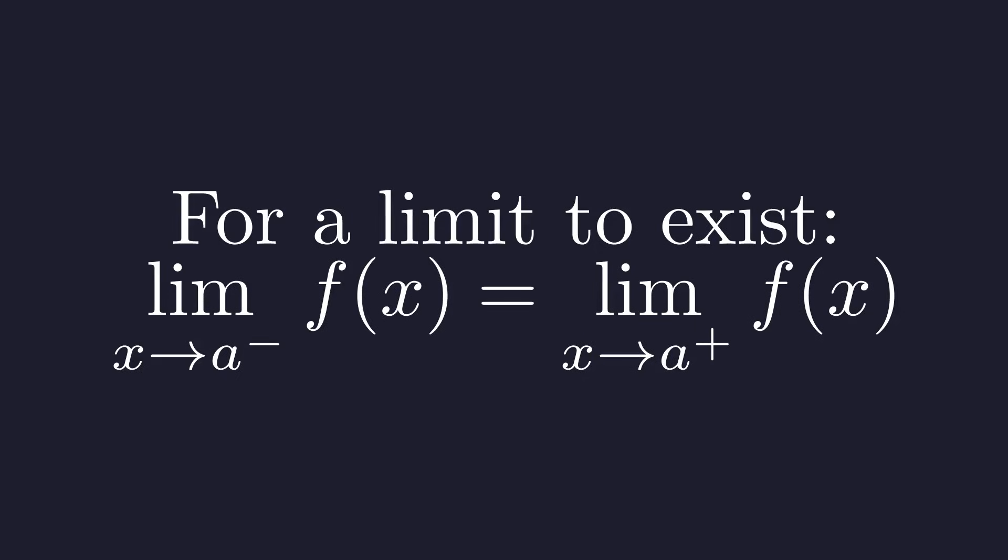A two-sided limit exists only if the limit from the left equals the limit from the right. If they don't match, the limit does not exist.